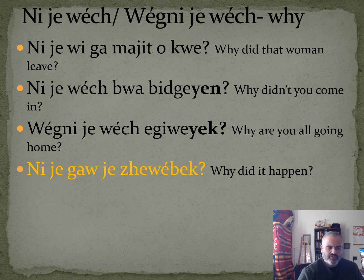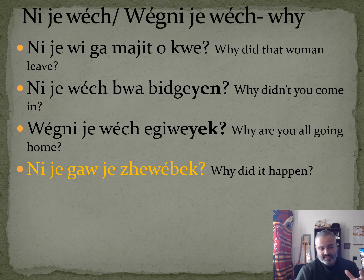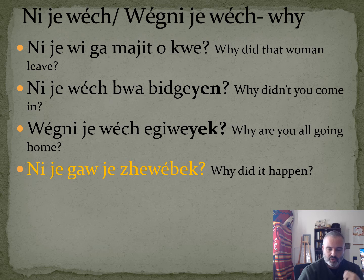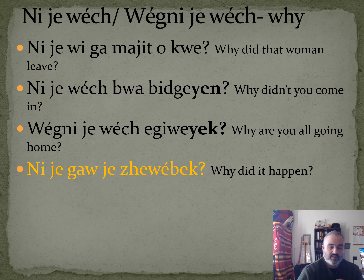Nije gaoje jewebuk means 'why did it happen?' — it's in the past so it's gaoje. If it were in the future, it'd be waoje, so nije waoje jewebuk means 'why was it going to happen?'